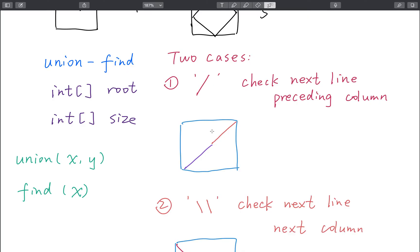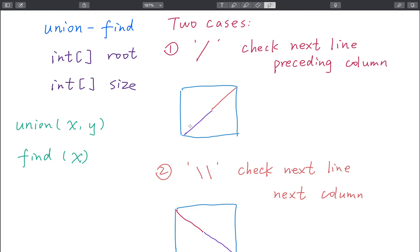Now let's think about two cases. One is if the current character is a slash. How do we check whether we can divide this area to two parts? Only when the slashes are continuous and connect from border to border. For a given character we need to check its next line preceding column. We check whether these two parts have the same root. If it has the same root, we know it can divide area to two parts, so we increment the count of the connected components by one.